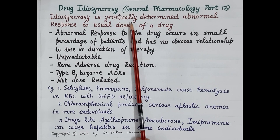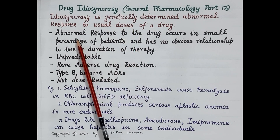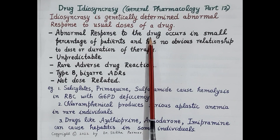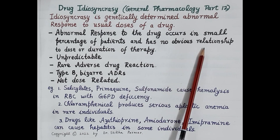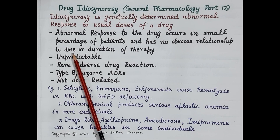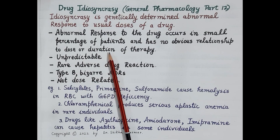Now let's look at the characteristic features of idiosyncratic reactions. Idiosyncrasy is an abnormal response to a drug that occurs in a small percentage of patients — these are rare adverse drug reactions. There is no obvious relationship of these idiosyncratic reactions to the dose of the drug or to the duration of the therapy.